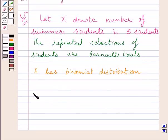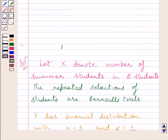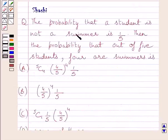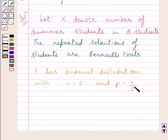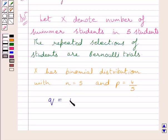X has binomial distribution with N equal to 5 and P equal to 4 upon 5. N represents the total number of trials, that is 5, and P is the probability that a student is a swimmer. We are given that the probability a student is not a swimmer is 1 upon 5, so the probability that a student is a swimmer equals 1 minus 1 upon 5, which is 4 upon 5. The probability that a student is not a swimmer is represented by Q, equal to 1 upon 5.